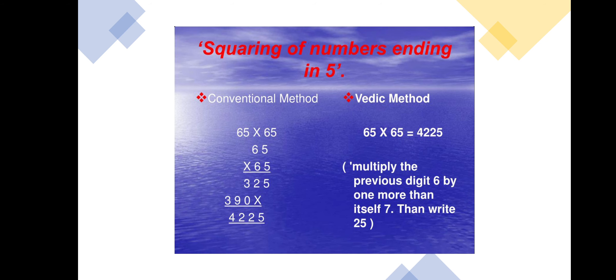Here we have squaring of numbers ending in 5. As per the conventional method, we all know how we multiply the numbers and here 65, when it is multiplied by 65, there is a calculation generally we study in school where we get the answer 4,225.